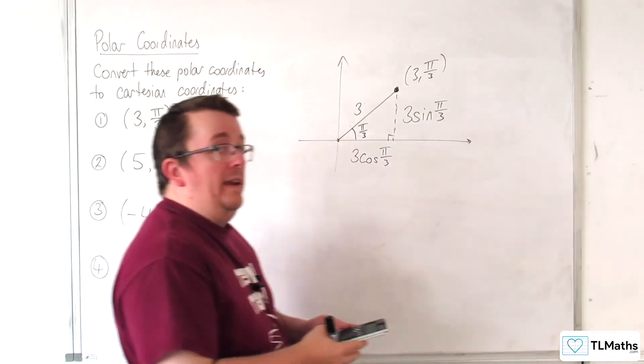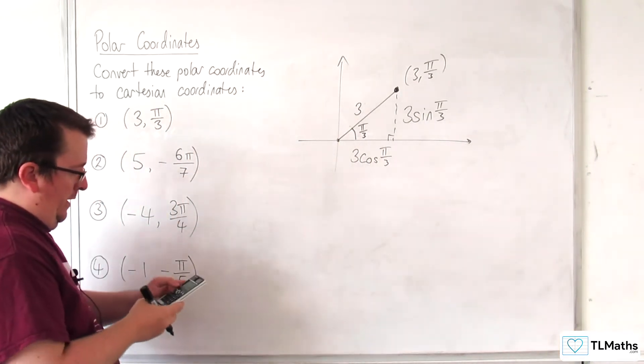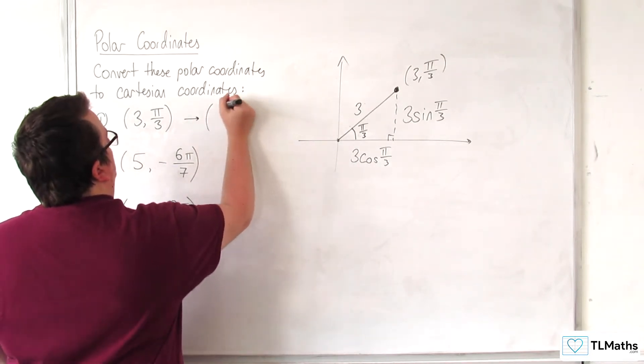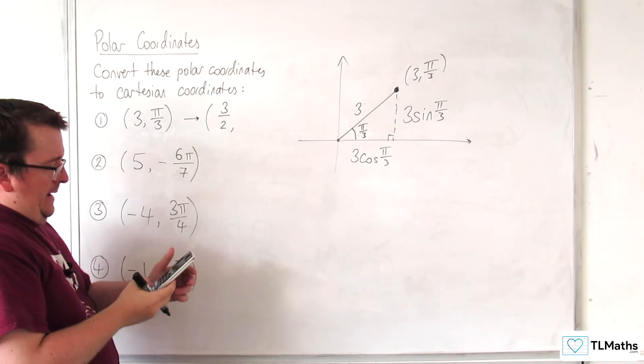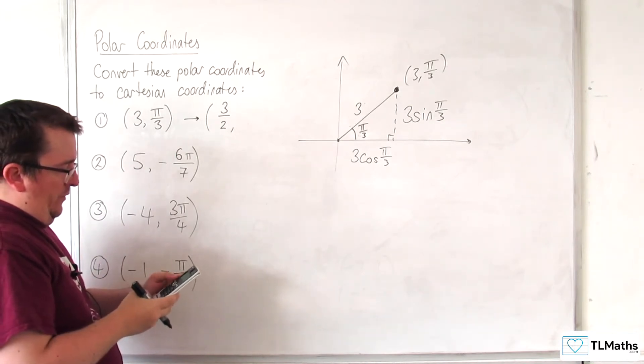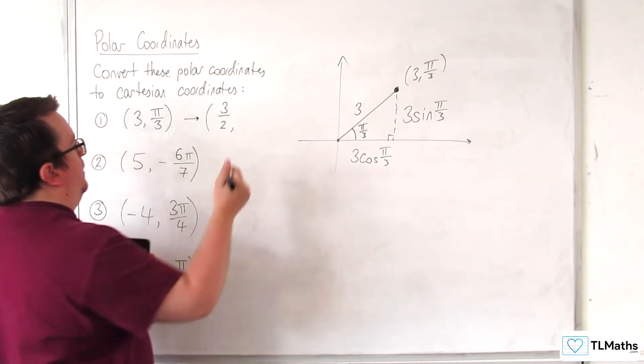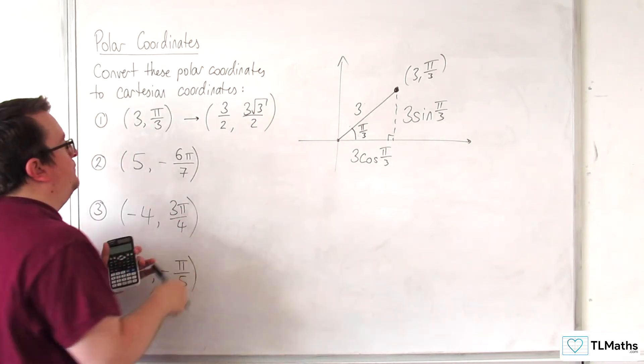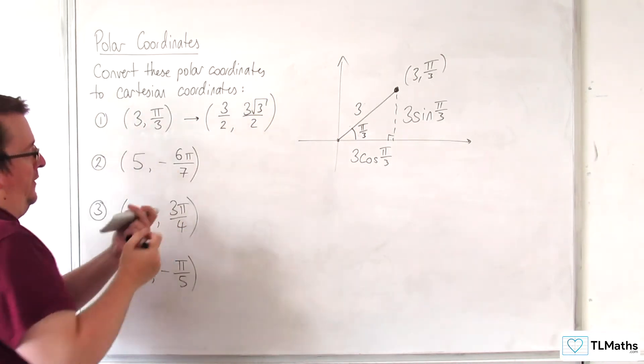So, make sure you calculate it as in radians. 3 cosine pi over 3 is 3 halves. So, that's the x coordinate. And 3 sine pi over 3 is the y coordinate 3 root 3 over 2. So, that's the polar, and that's the Cartesian.